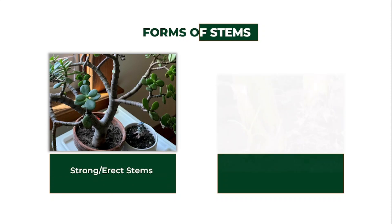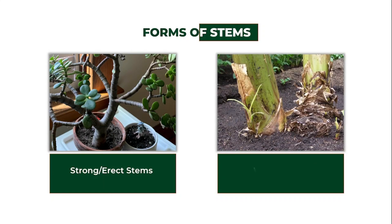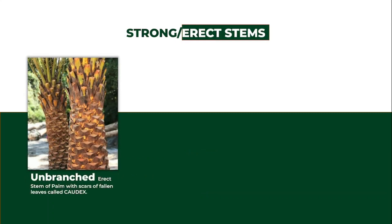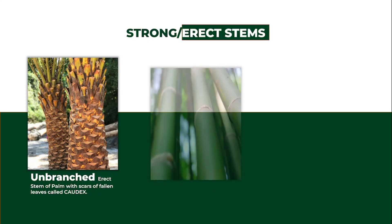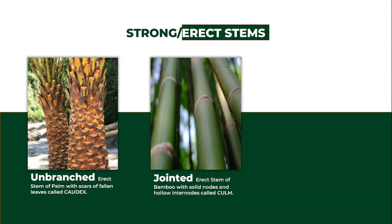Strong or erect stems comprise a lot of varieties. First, we have the unbranched erect stem, which is characterized by scars of falling leaves called cortex, and this can be found in palm trees. Then we have the jointed erect stem, which is characterized by solid nodes and hollow internodes, called culm, and this can be found in bamboos.